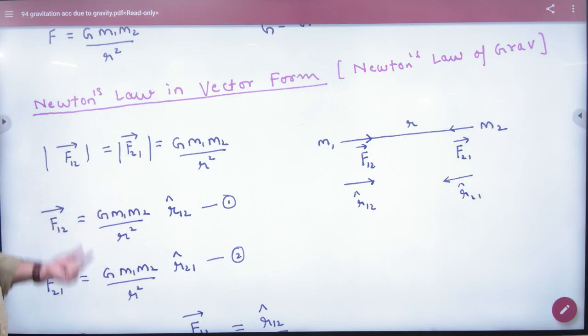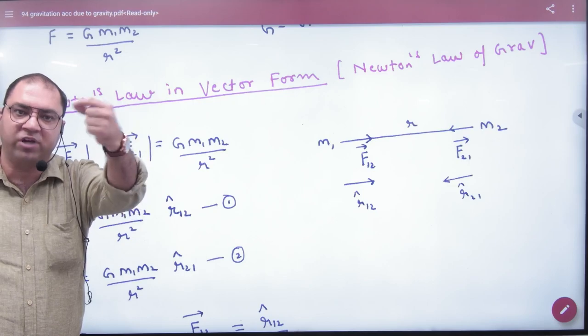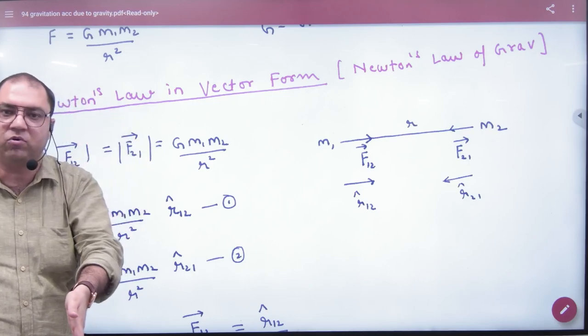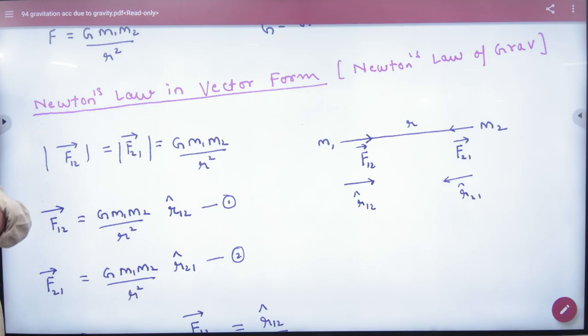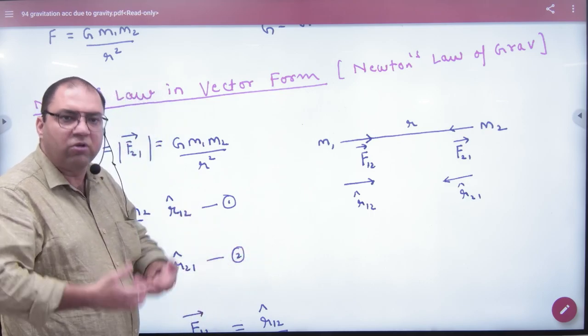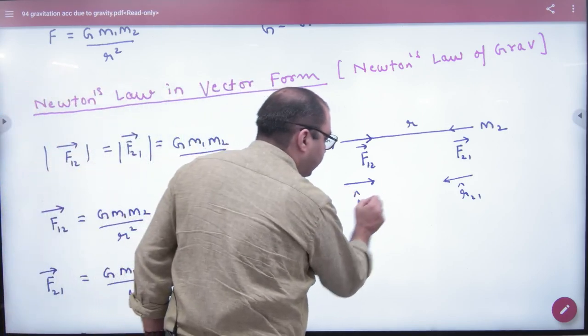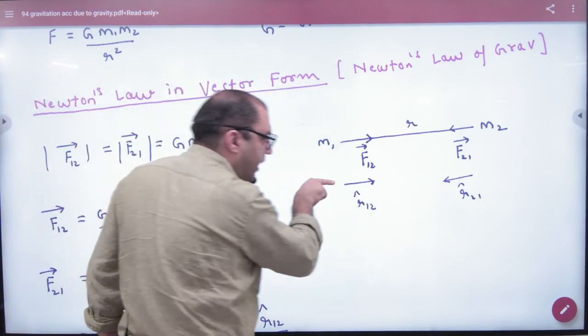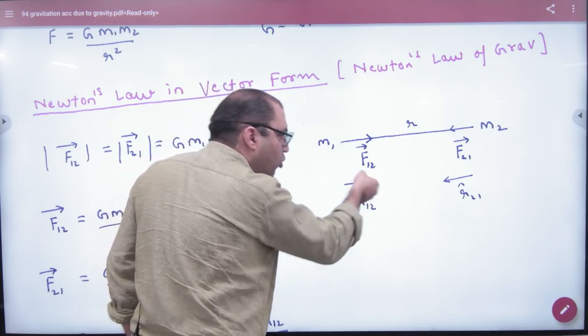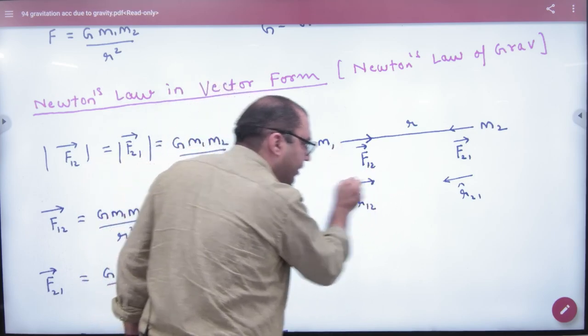But if I ask in vector form, F1,2 vector, then I have to put a cap under this magnitude, whether i-cap, j-cap, k-cap, r-cap, or a-cap, which would be the direction. Because caps means unit vector and direction, so I don't know that this will always answer in i-cap or j-cap. So I assumed that I took a unit vector, I assumed that a unit vector is r1,2 cap, which is the direction of this. I am showing that the direction of this r1,2 cap is right.